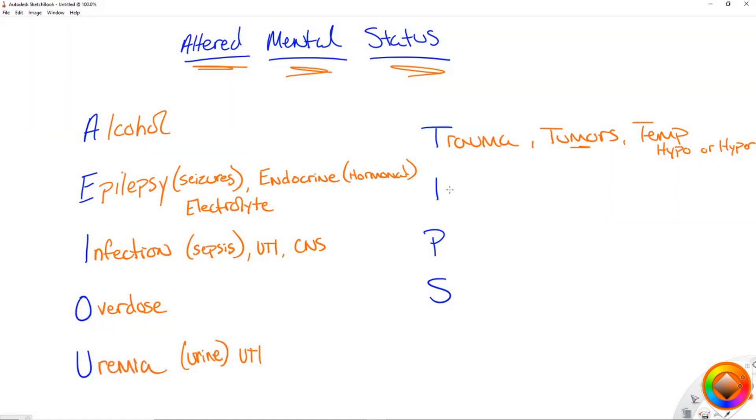Now moving to the next I is insulin. And here we're thinking diabetics. Is there a problem with a diabetic? Do they have too low sugar in that they're hypoglycemic or are they too high sugar and they're hyperglycemic?